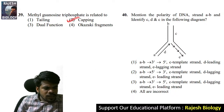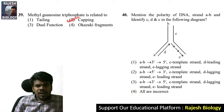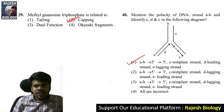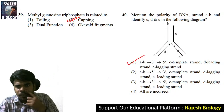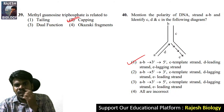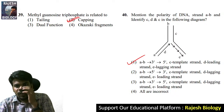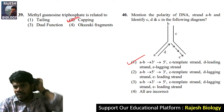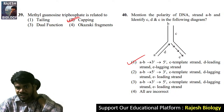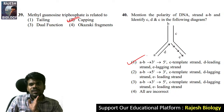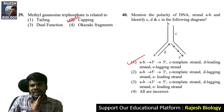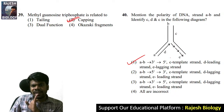Question 40: the right answer is option one. A is 3' to 5', B is 5' to 3', C is the template strand, D is the leading strand, and E is the lagging strand. It is a very easy question — E is lagging and D is leading.